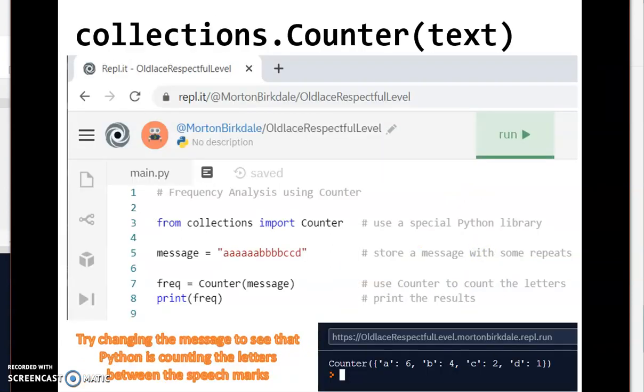One of the things that we will be using is a special Python library called collections and one of the functions in there called counter. This simple program shows you what happens if we give a message and then use counter for that message. What it does is it counts how many occurrences there are of each character. So we can see there are six A's, four B's, two C's and one D in this message. And this will allow us to perform frequency analysis with the computer doing the counting for us.